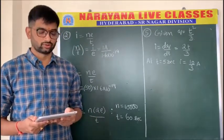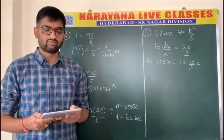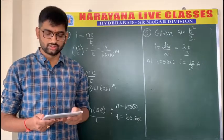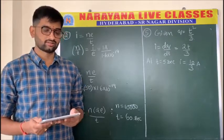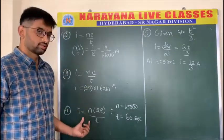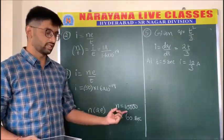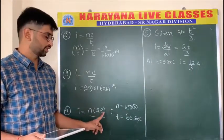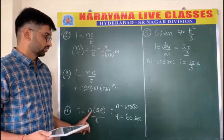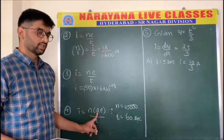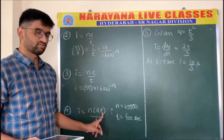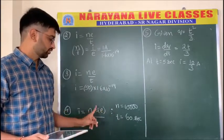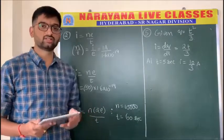Problem number four: ten thousand alpha particles per minute are passing through a straight conductor of radius r. The resulting electric current — charge of each alpha particle is 2e = 2×1.6×10⁻¹⁹. So current = 10000 × 2 × 1.6×10⁻¹⁹ divided by 60 seconds, giving the answer.